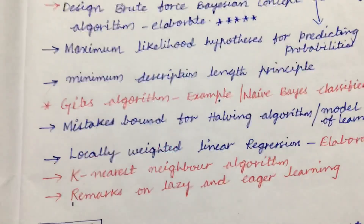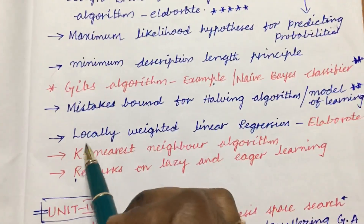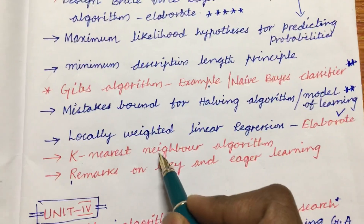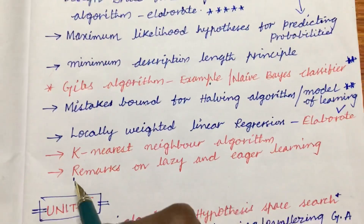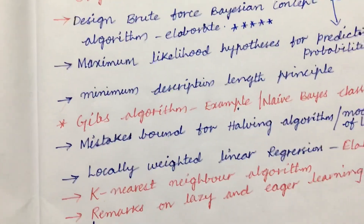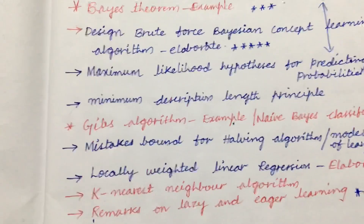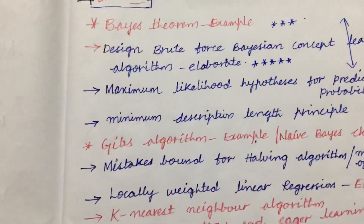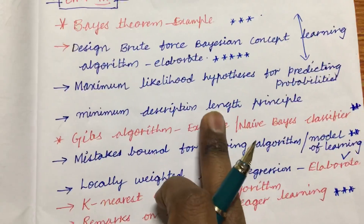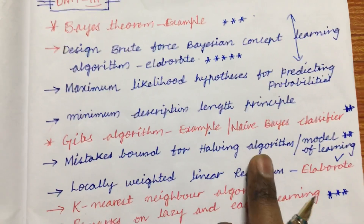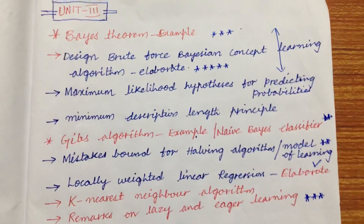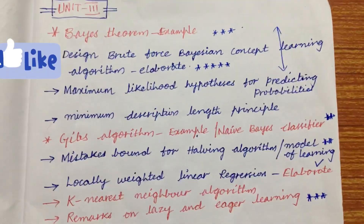Locally weighted linear regression, the k-nearest neighbor algorithm, and remarks on lazy versus eager learning are also much-awaited questions. We can expect two questions from Unit 3: the Bayes theorem or brute-force Bayesian concept, and the minimum description length principle or mistake bound for the halving algorithm. These cover questions five and six from Unit 3.